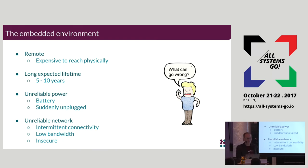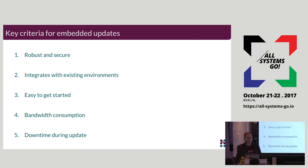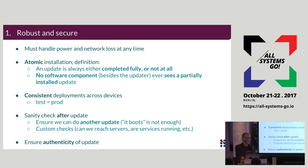There are lots of things that can go wrong. As mentioned, robustness and security are top priority number one. Beyond that, you look at how easy it is to integrate with your existing workflow, how easy it is to get started, and then bandwidth consumption and downtime. Those are important for end users, but the first three items are really more for the system designers. When it comes to robustness, what we mean is you can never brick the device — if you download an update, it is installed all the way or not installed at all.